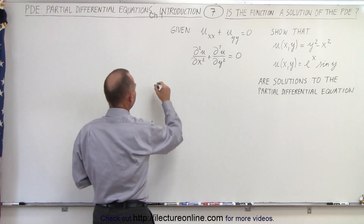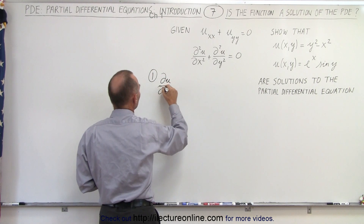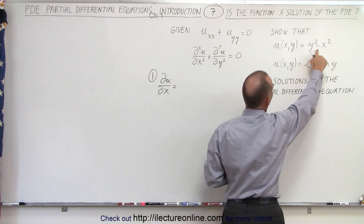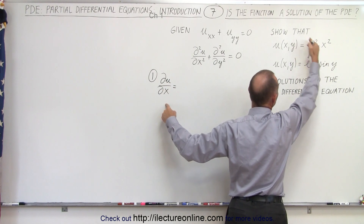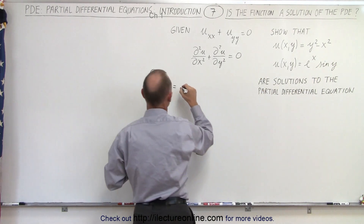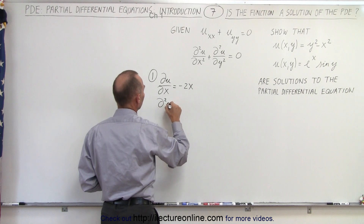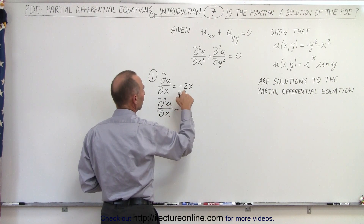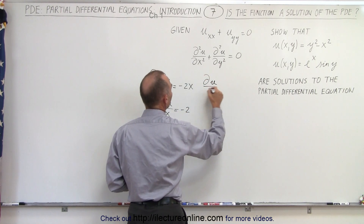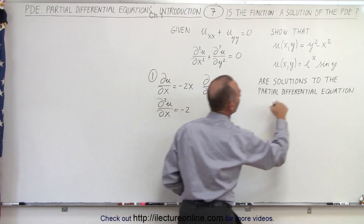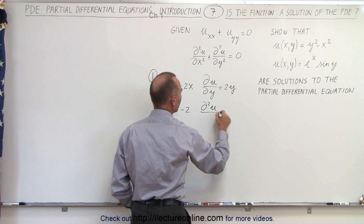Let's try our first example. We're going to take the partial derivative with respect to x first. Since we're taking the partial derivative with respect to x, y becomes a constant, so the y squared term drops off and we end up with minus 2x. Then if we take the second derivative of u with respect to x, we take the derivative of minus 2x, which gives us minus 2. We do the same with the partial derivative with respect to y: now x becomes a constant and so we end up with 2y.